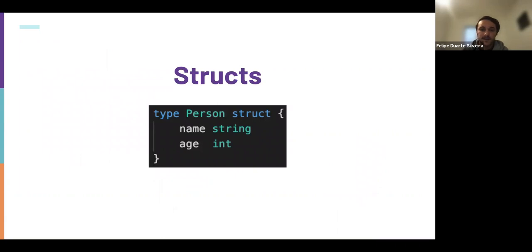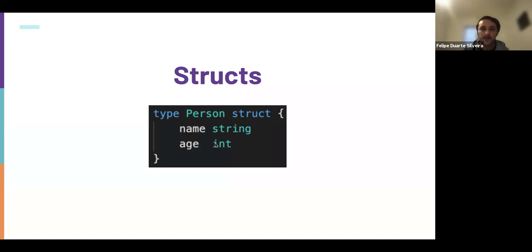As an example — the goal of the presentation is to show the concurrent features, but just to give you an idea — this is a struct in Go. It's like a class in other languages, but from Go's perspective it's just a group of attributes encapsulating that structure. You can also declare methods for this struct and do object-oriented programming in Go, so a struct can behave like a class.